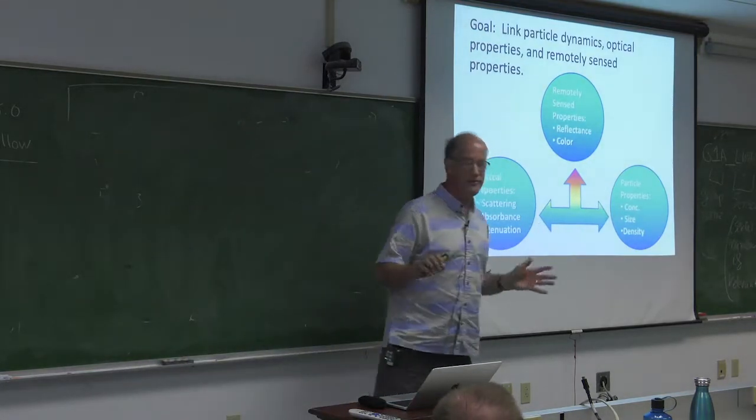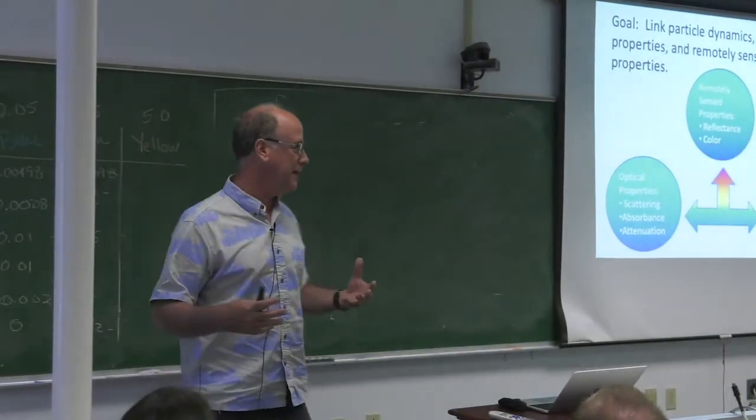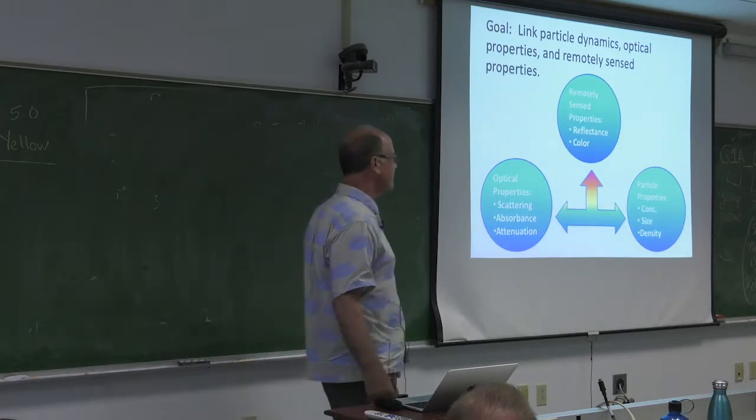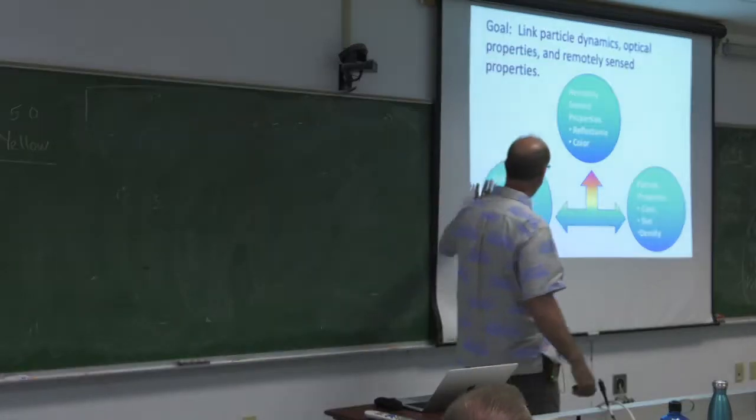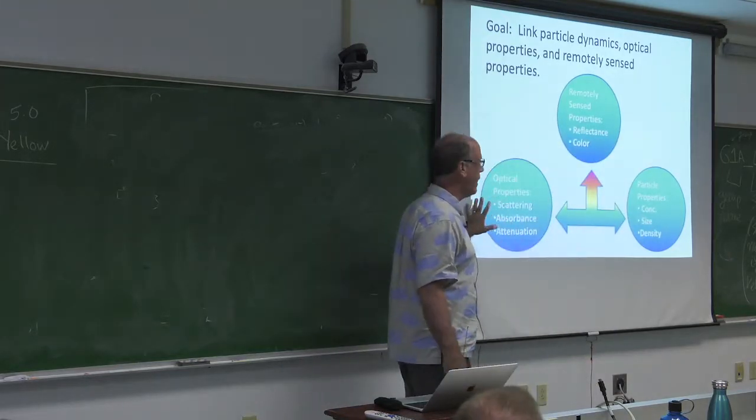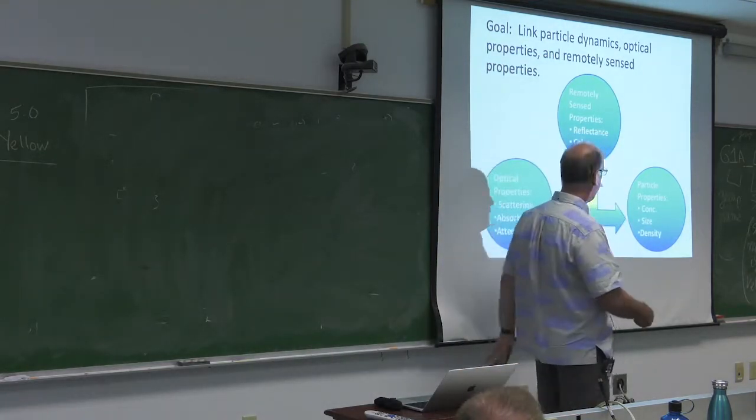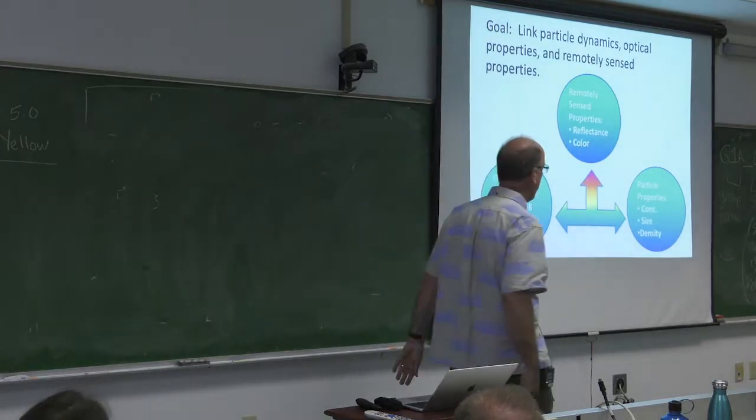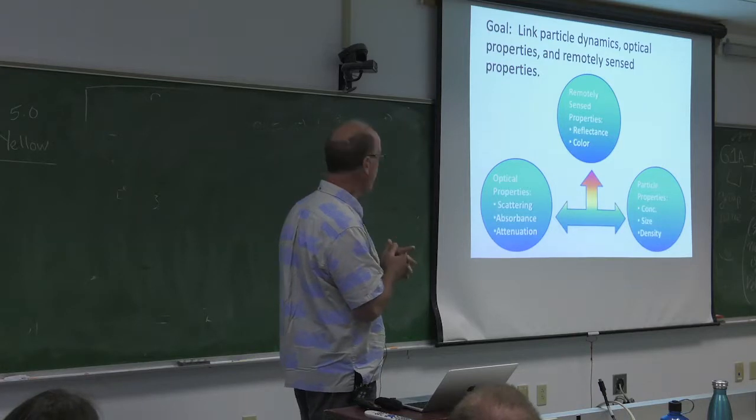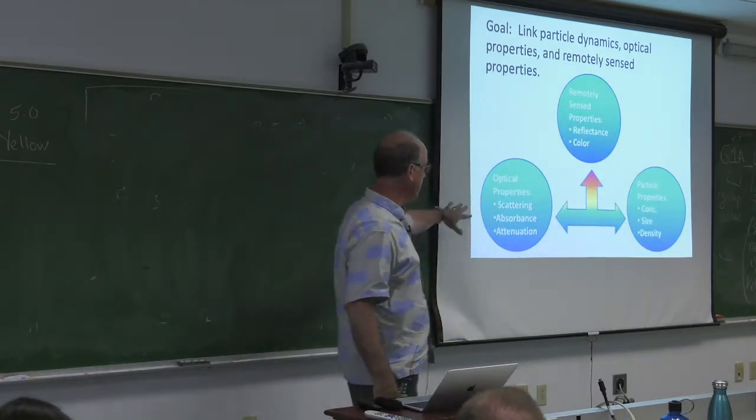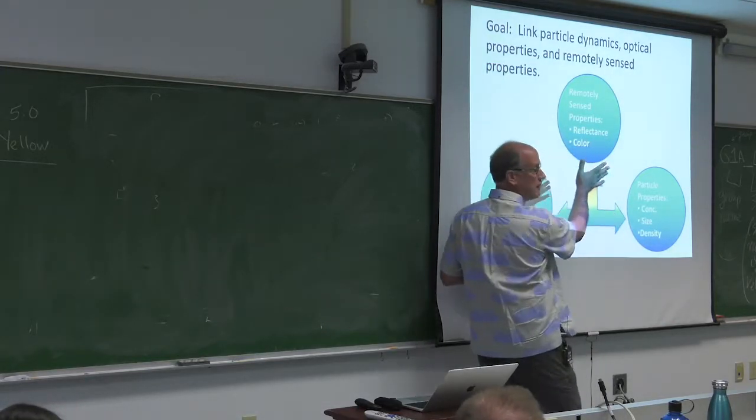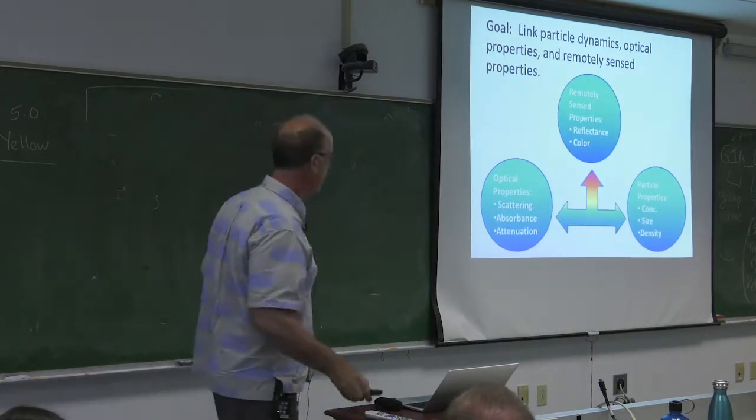So this figure summarizes the approach that Emanuel and I, with others, have been taking over the years to try to use the correlation between sediment and optics to figure out things about how the ocean works. So on the bottom here, we use optical properties to figure out things about particle properties. But that flows both ways. You can use particle properties to say something about what the optical properties would be. The key particle properties that we care about are concentration - that has overriding effect on the optical properties - but also size and density or composition. The optical properties we tend to use are scattering, including forward and backward, absorbance and attenuation.